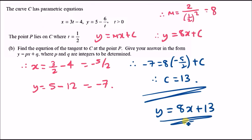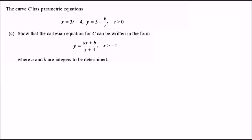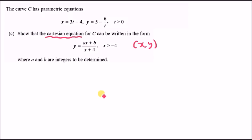Part C: show that the Cartesian equation for C can be written in the form y equals (ax plus b) over (x plus 4), where a and b are integers. The Cartesian equation has no t — we need to eliminate t by substitution from the parametric equations.